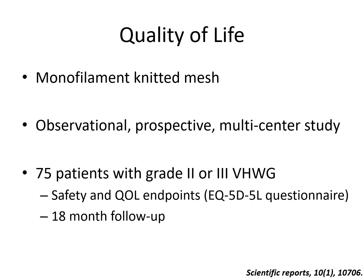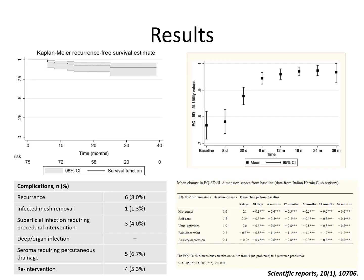Interestingly, this study used safety as well as quality of life endpoints using the EQ-5D-5L questionnaire with 18-month follow-up. The results showed Kaplan-Meier recurrence-free survival estimates where, by 40 months, recurrence rates were on par with other studies — an overall recurrence risk of approximately 8%. Risk for infected mesh or mesh complications ranged from 1% to 4%. More importantly, across every single domain of the quality of life questionnaire — including movement and other domains — there was quite a bit of improvement in patients' quality of life downstream, which is an important consideration in choosing this mesh.